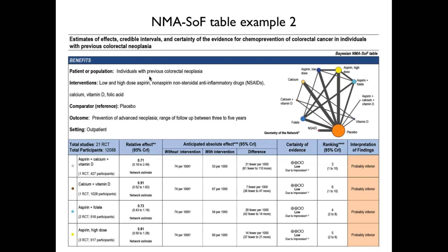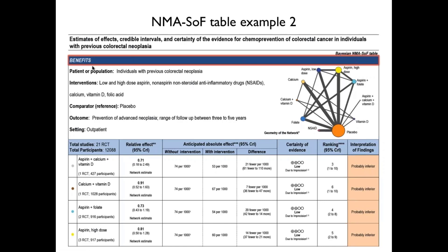For the upper section, you can see the same labels regarding the PICO information: the patient population, the intervention, the comparator or reference, the outcome with the follow-up information, and the setting. The only new information added to this final NMA SoF table format is the label 'benefits.' We decided to include this label since for healthcare decision-making we need at least two NMA SoF tables — one displaying information for a benefit outcome, and another for a harm outcome. This table shows information for the benefit outcome prevention of advanced neoplasia, and we have another table for the harm outcome in the next slide.